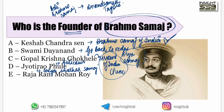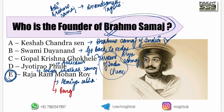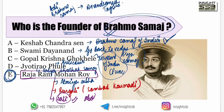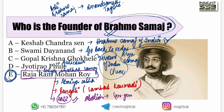Raja Ram Mohan Roy founded Brahmo Samaj and also started Atmiya Sabha. He also started the Bengali newspaper Sambad Kaumudi. He was the first person to raise his voice against Sati — the practice of burning a widow alive with her deceased husband. The government then took action and Sati was finally abolished by the then Governor General Lord William Bentick.